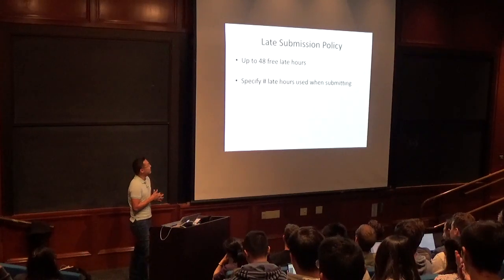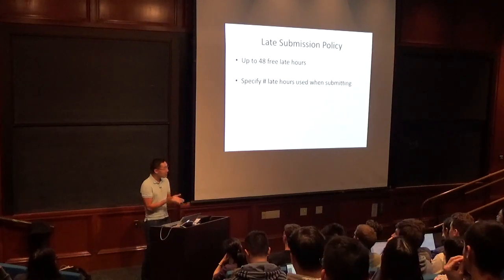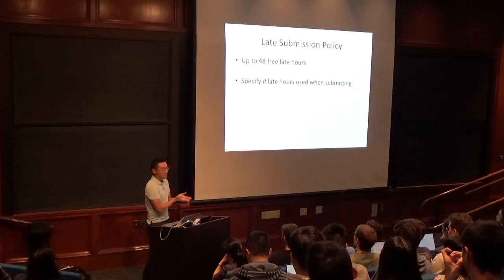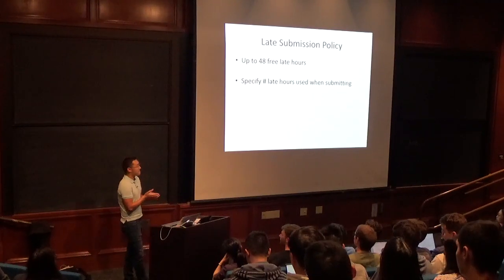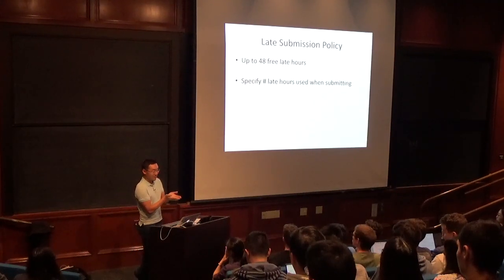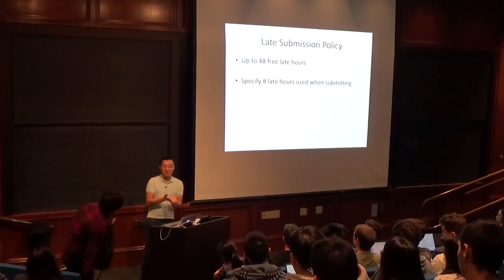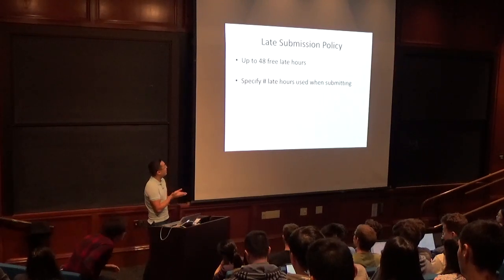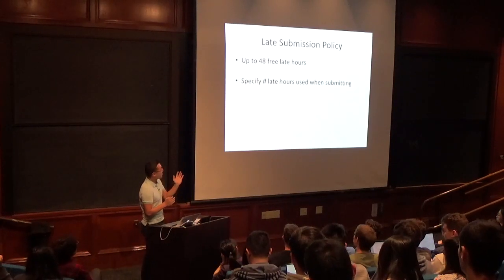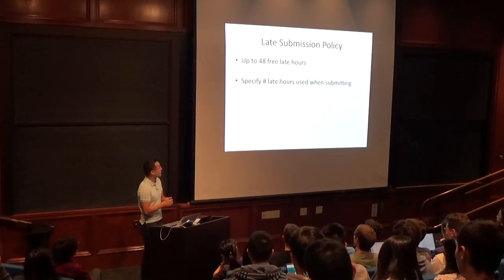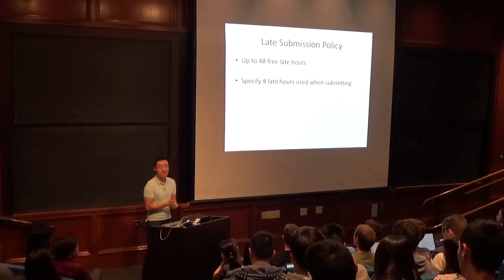The late submission policy: up to 48 free hours in increments of one hour each. For example, if a homework is due Wednesday at 9 p.m. and you submit at 9:15 p.m., you've used one hour of late homework credits. You should specify the number of late hours used when submitting — we'll also keep track on Gradescope.